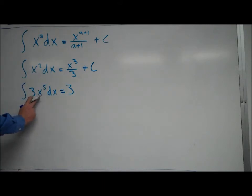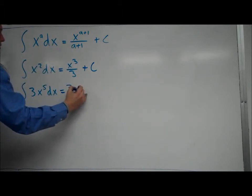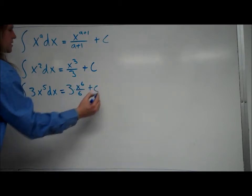and x to the 5th, we add 1 to the exponent, we divide by that, so it ends up being 3x to the 6 over 6, basically, so it's 3 times that, plus c,